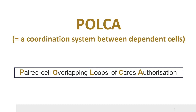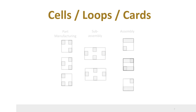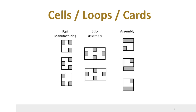POLCA coordinates the order flow between the dependent cells. It is an acronym for Paired Cell Overlapping Loops of Cards Authorization. We will explain this further. First, we have cells — for instance, cell P3, S2, and A1. A certain production order may need these cells.